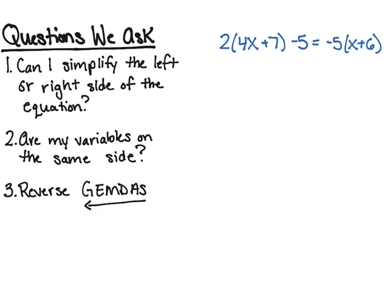The last type of problem we're going to be working on today is going to incorporate all the information we've learned the past few days into one problem. The problem reads: 2(4x + 7) - 5 = -5(x + 6). The first thing I'm going to do is draw my lines around the equal sign so that I know to keep this equation balanced.